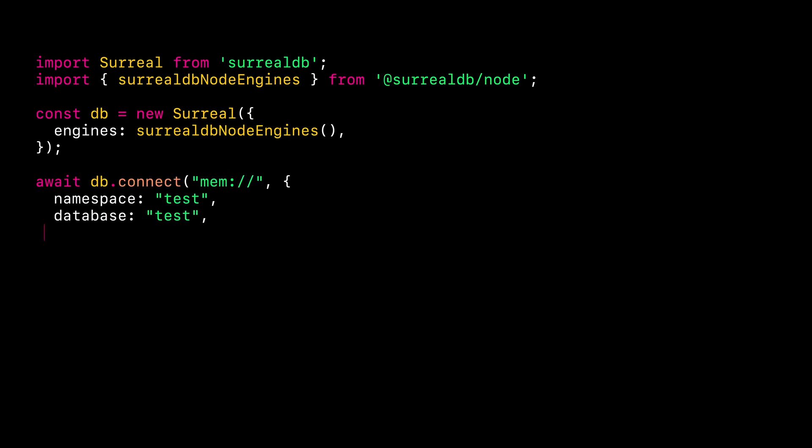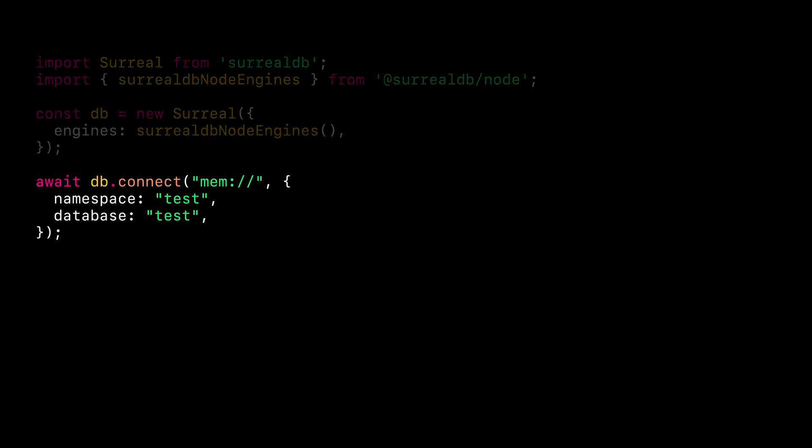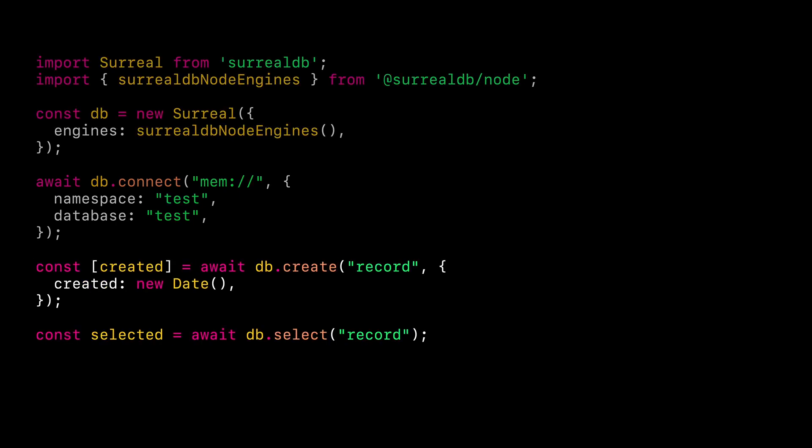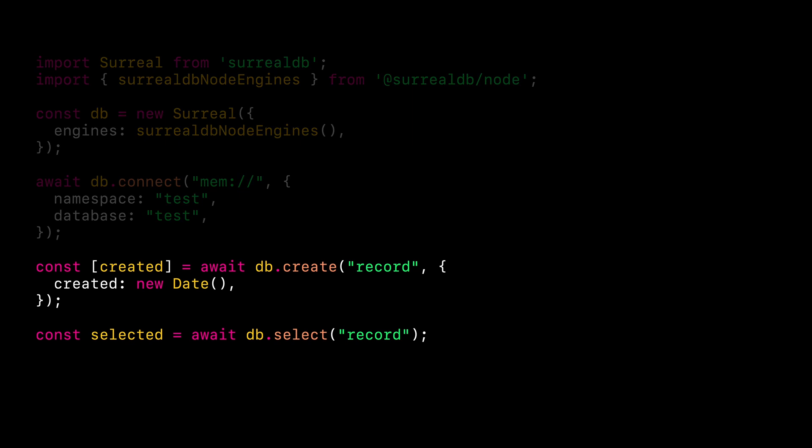Because our Node.js SDK is simply an engine to the JavaScript SDK, we can use the JavaScript SDK like we normally would, although now with the mem and SurrealKV protocols added to it. First, let's try to connect to an in-memory instance. Here, we will specify the mem protocol in the URL with no further address specified. Secondly, we will specify a namespace and a database for our connection right in the connect method. To try out our connection, let's take this example where we are creating a record and then selecting all records from the table.